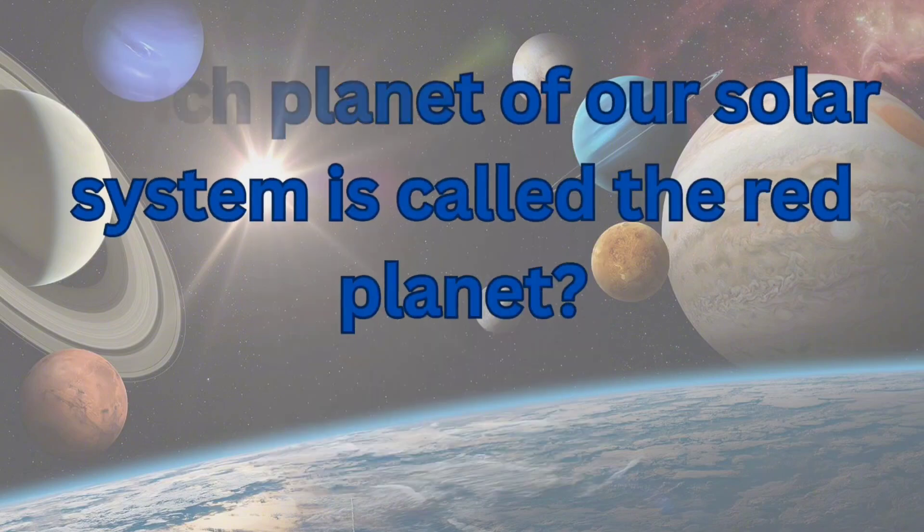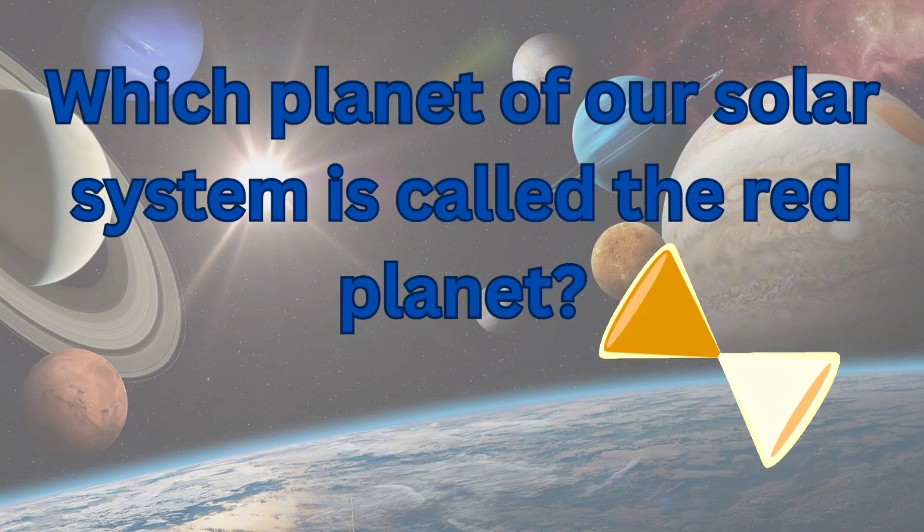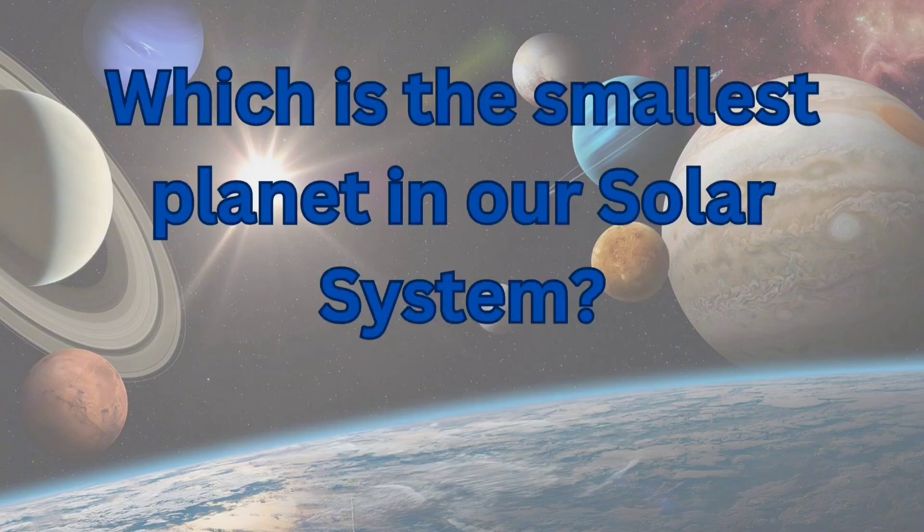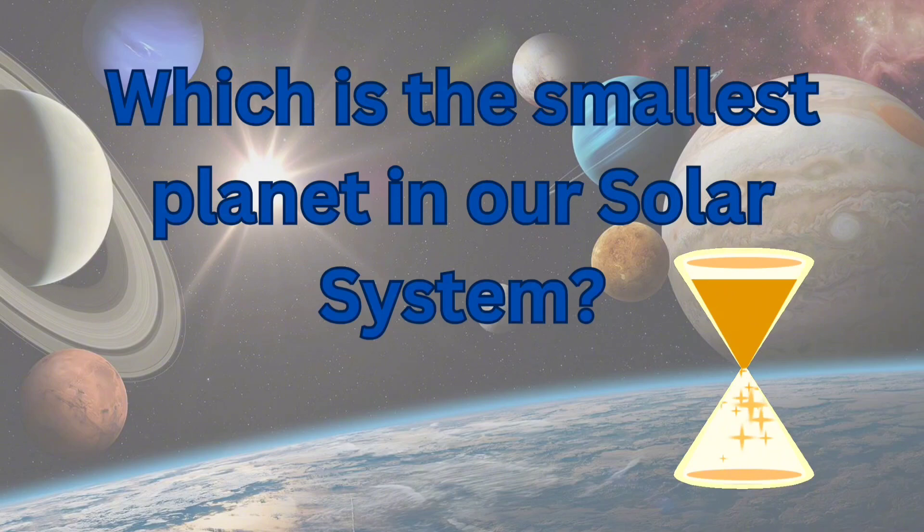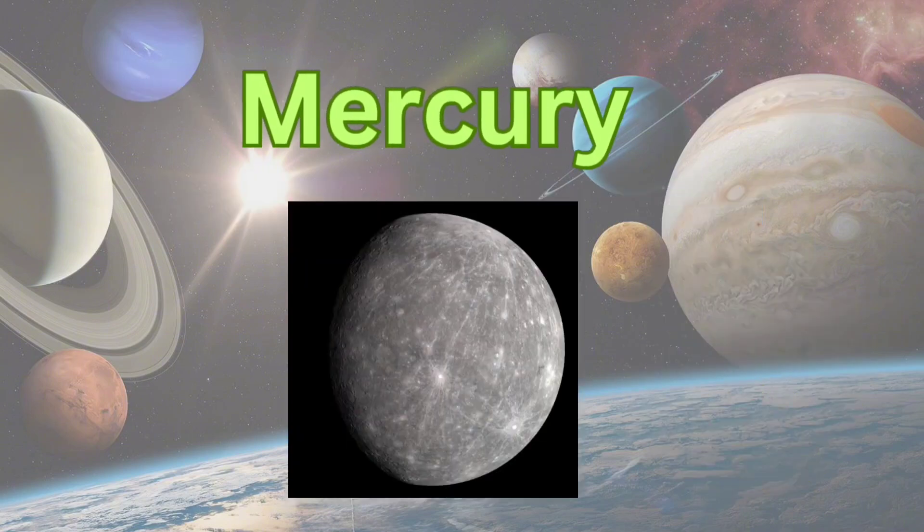Which planet of our solar system is called the red planet? Mars. Which is the smallest planet in our solar system? Mercury.